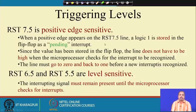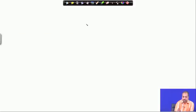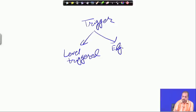The next important topic is triggering level. Interrupts can be classified by triggering: one classification is level-triggered and another is edge-triggered, just like flip-flops. Level-triggered means the high level of the interrupt line is sensed by the processor. Edge-triggered means the rising edge is sensed as the interrupting point.